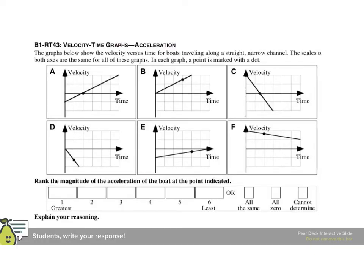The graphs below show the velocity versus time for boats traveling along a straight narrow channel. The scales on both axes are the same for all of these graphs. In each graph, a point is marked with a dot. And we want to rank the magnitude of the acceleration of the boat at the point indicated. So we want, since these are all v-t graphs, and we want the acceleration, that is the slope. And these are all lines, so we're not going to specify where. Just the slope of the line.